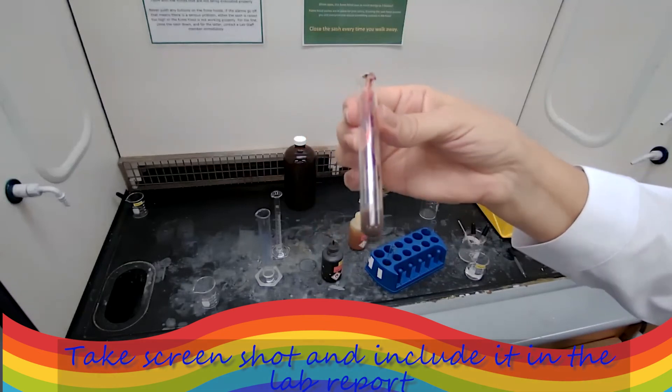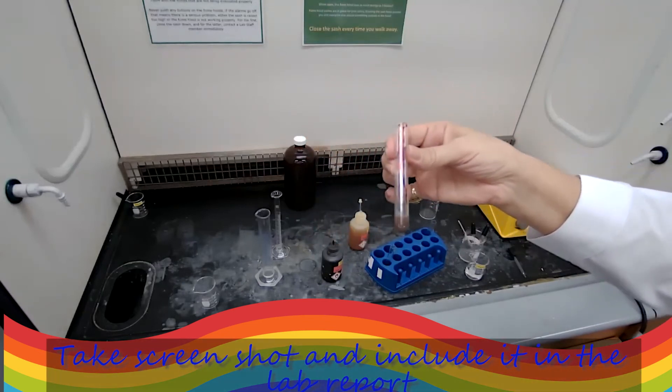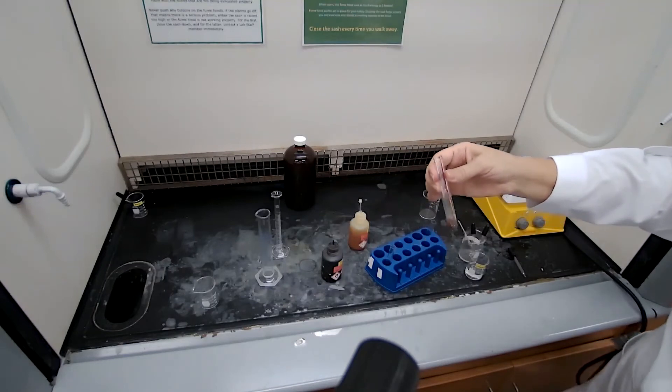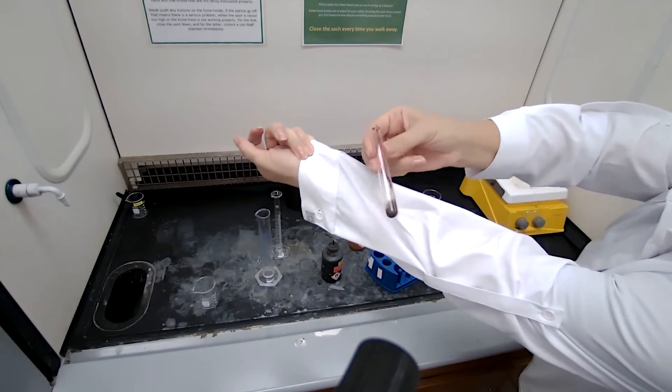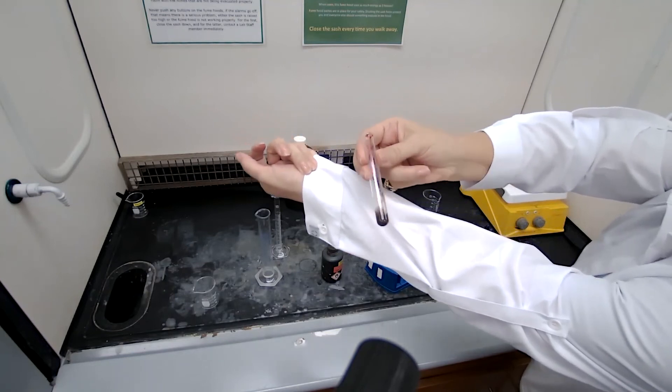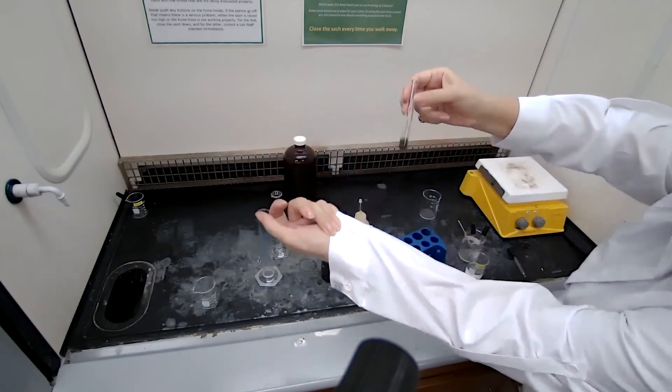And that brown precipitate means that we have a color change. I'm going to put it on the white background so you could see the color. The purple color disappeared and the brown color appeared.